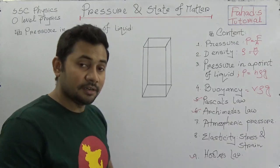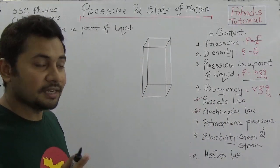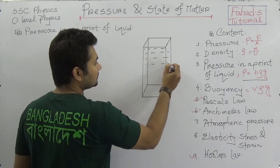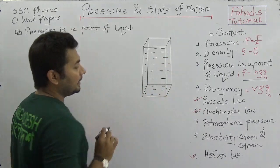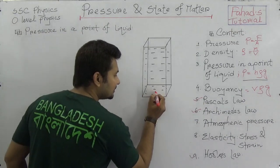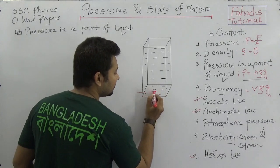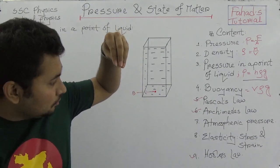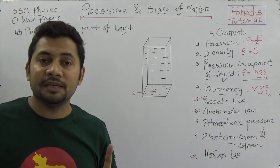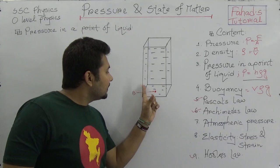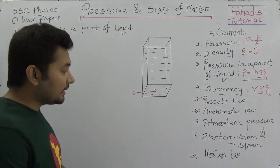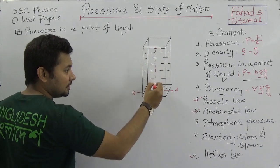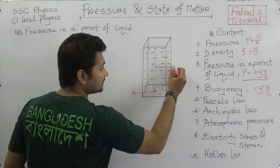You may already know this, but let's go through it properly. Suppose this is a vessel and we keep some water here. At the surface area, there is a point called point B and we need to find out the pressure working at point B. To explain it, we need to think about the area of the surface of the vessel, which is A, and the height from the surface down to that point, which is h.